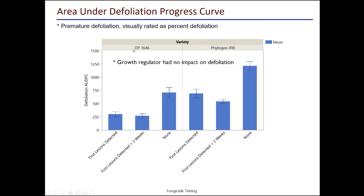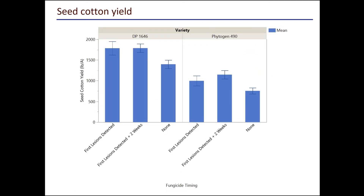In terms of overall seed cotton yield, 1646 out-yielded Phytogen 490 significantly. For 1646, either one or two applications significantly prevented yield loss by about 500 pounds per acre. For Phytogen 490, either one or two applications both prevented yield loss due to target spot, but two applications did better than one, which was better than no applications at all. This shows a significant difference in response to target spot between varieties with different susceptibilities, and that timing and choice of one or two fungicide applications should depend on the environment and variety being grown.